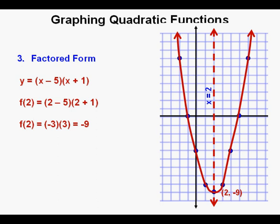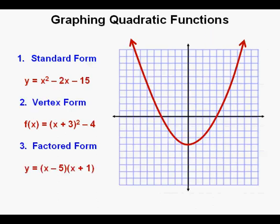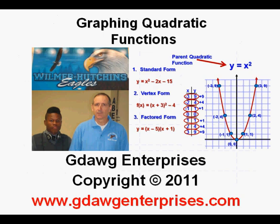We've essentially translated the parent quadratic function y equals x squared down and to the right. In this lesson, we've gone over examples of graphing quadratic functions in three different forms: the standard or general form, the vertex form, and the factored form. Depending on how well you followed along, it might be a good idea to get additional practice graphing using these methods. This has been graphing quadratic functions. Thanks for viewing.